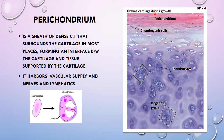The perichondrium is a dense sheet of connective tissue that surrounds cartilage in most locations, forming an interface between the cartilage and the tissue it supports. Since cartilage is avascular, the perichondrium harbors all the blood vessels, nerves, and lymphatics. The chondrocytes in the matrix receive their nutrition from blood vessels via the perichondrium.